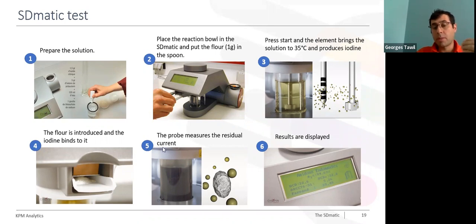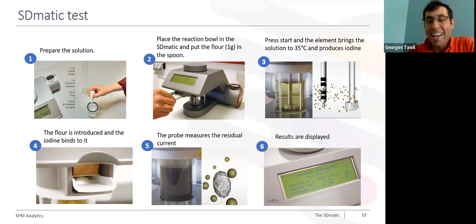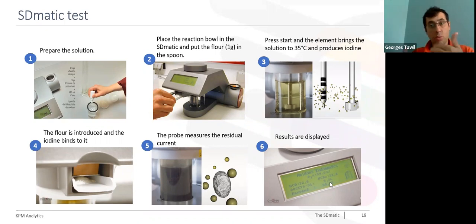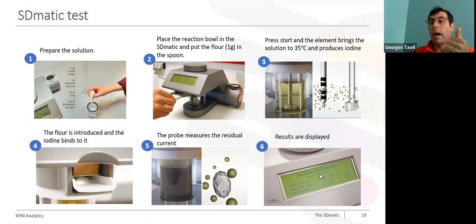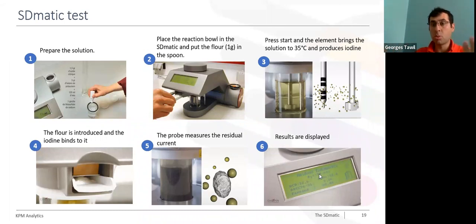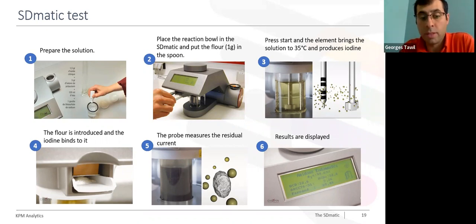The probe in step five will measure the residual current. In the last step, the result will simply be displayed on the screen. You will have the result in terms of iodine absorption in UCD and on the UCD scale — those are Chopin units. The SD-MATIC also gives the result in customized units if you are using other ways to quantify the amount of damaged starch.